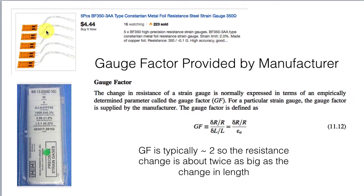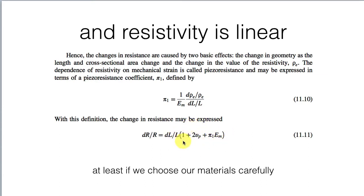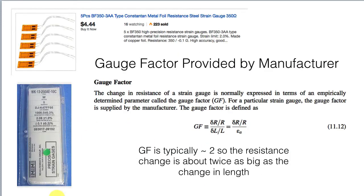You can find considerably cheaper strain gauges on eBay — for example, $4.44 for five pieces — though these are not the precision gauges you'd get from Omega. When you get a gauge, you'll need to know the gauge factor, which is provided by the manufacturer. The gauge factor is essentially one plus twice Poisson's ratio, plus the resistivity effect. It's always going to be a value around two, so the resistance change will be about twice as large as the change in length.